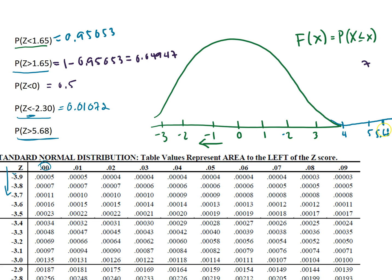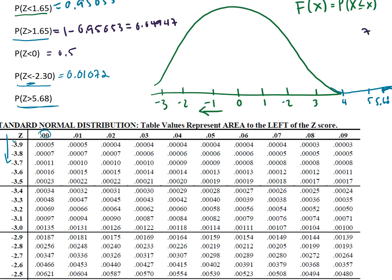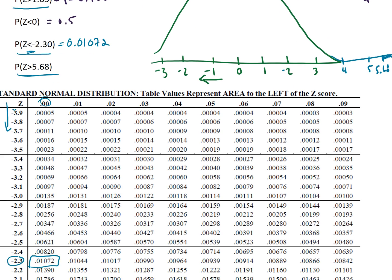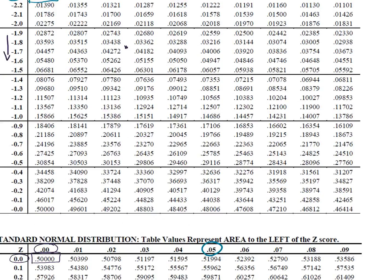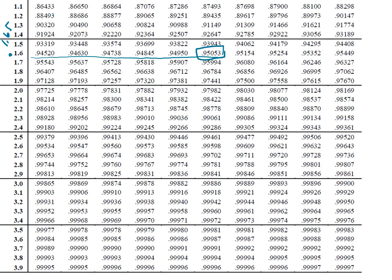However the area that's under those tails is really small once we get anywhere past 4 and really past 5 is going to be really small. So the area past 5.68 is going to be out here very very very very small. So if we look on the table we want to know the probability that z is greater than 5.68. We look for the z-score 5.68 and we can see that we don't even get to 5.6 on the table, we only get to 3.9 and then 9.